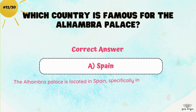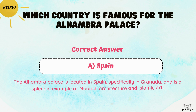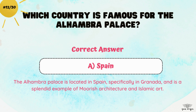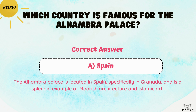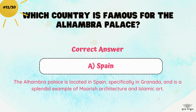The correct answer is A. Spain. The Alhambra Palace is located in Spain, specifically in Granada, and is a splendid example of Moorish architecture and Islamic art.